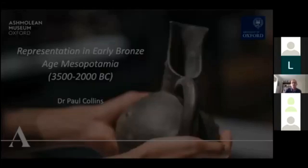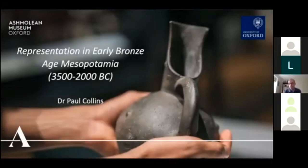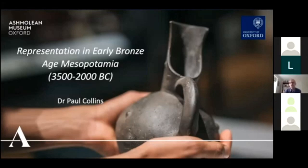Thank you very much for inviting me to speak archaeologically. This is a wonderful initiative and it's marvellous to contribute something to this programme. Today I'm going to talk about visual representation — how the ancient people of Mesopotamia represented their world — covering quite a long period, the so-called early Bronze Age, between roughly 3,500 and 2,000 BC. Over the next hour or so I'll attempt to show you some of the highlights and the meaning behind this imagery.